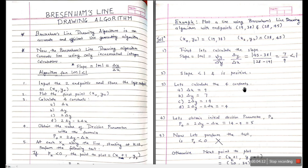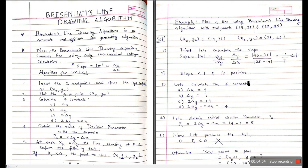Now let's calculate the four constants. Delta x = x2 - x1 = 28 - 19 = 9. Delta y = |y2 - y1| = |45 - 38| = 7. The third constant is 2 delta y = 14. The fourth constant is 2 delta y minus 2 delta x = 14 - 18 = -4.